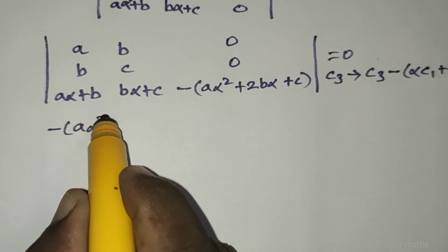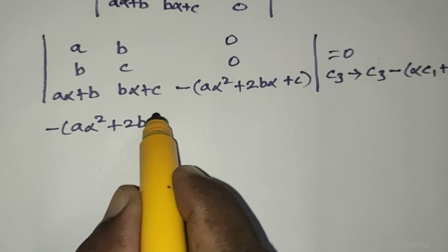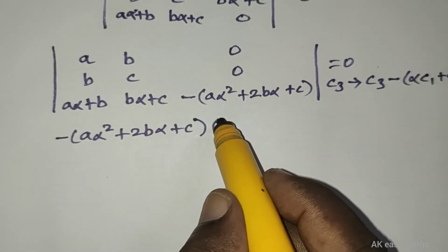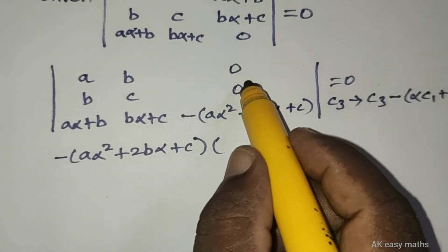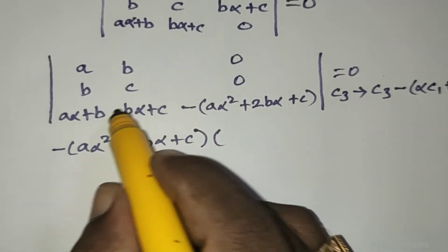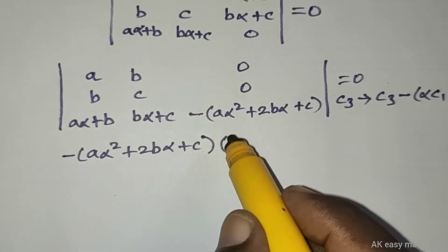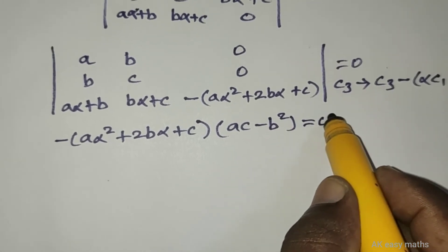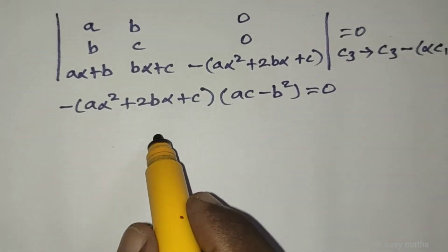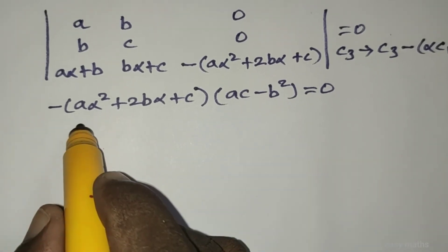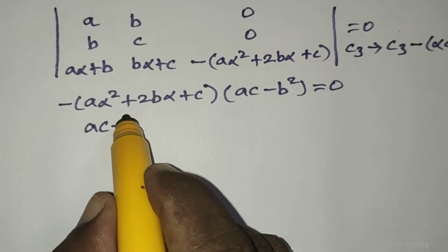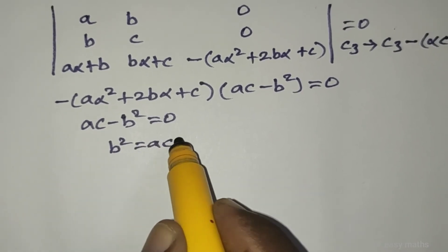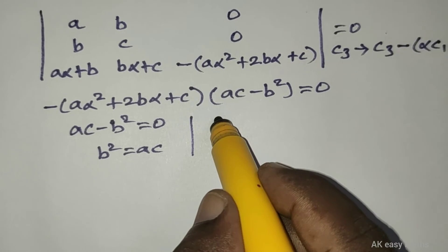Minus a alpha squared plus 2b alpha plus c equals 0. Considering only the determinant value from the remaining terms, we get ac minus b squared equal to 0. Therefore, b squared equals ac.